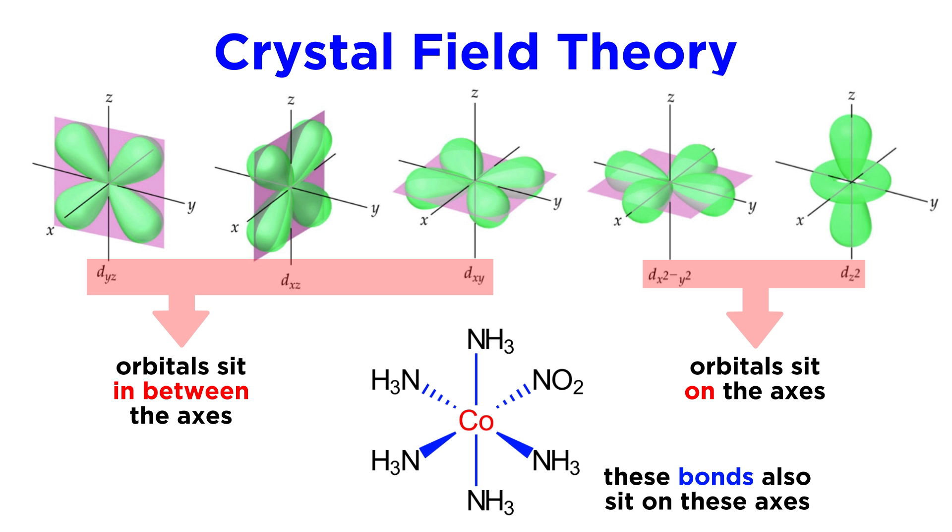Looking at the octahedral complex, the bonds to the ligands also sit on these axes, which means that in order for ligands to approach the metal atom, their point charges must repel the electron density in these two orbitals.